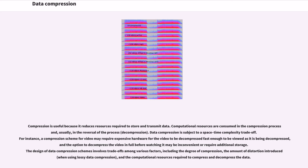The design of data compression schemes involves trade-offs among various factors, including the degree of compression, the amount of distortion introduced when using lossy data compression, and the computational resources required to compress and decompress the data.